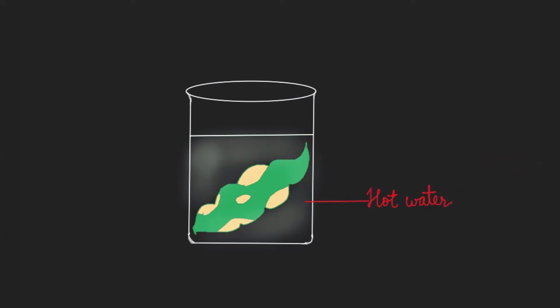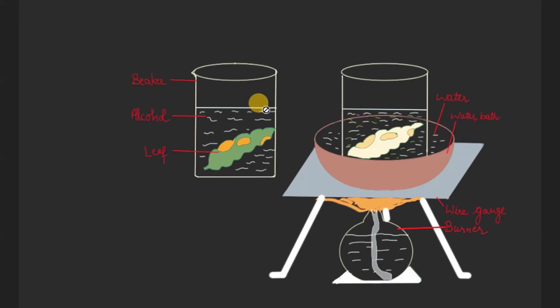Then we will dip this leaf into boiling hot water, and then we will shift this leaf into alcohol. We will take alcohol in a beaker and place the leaf in it. Now we will heat it up, but never heat the alcohol directly over the flame.